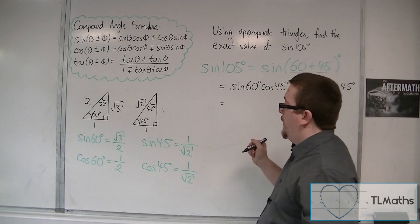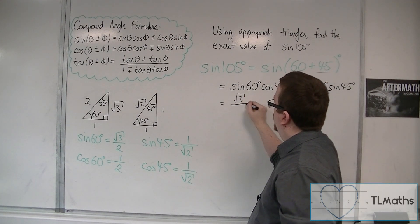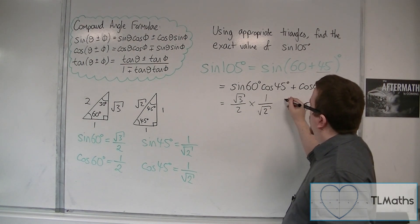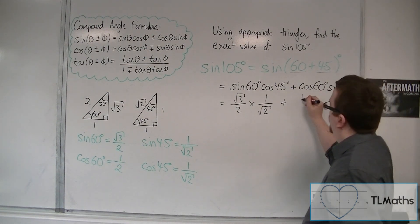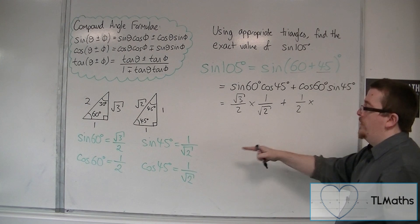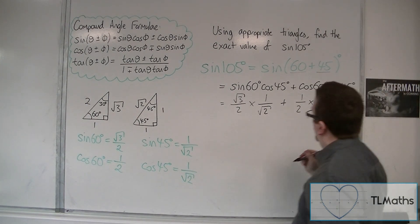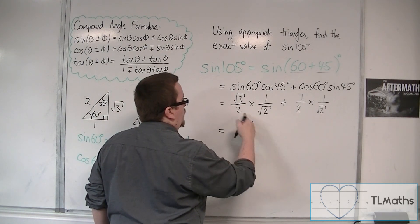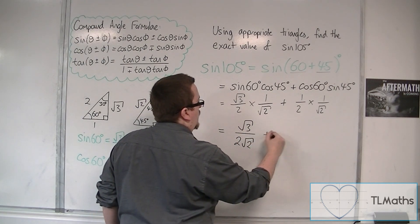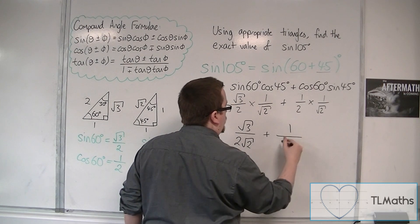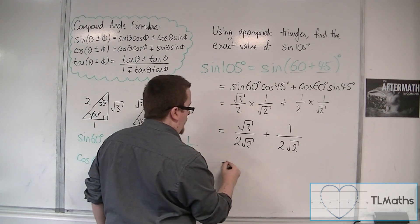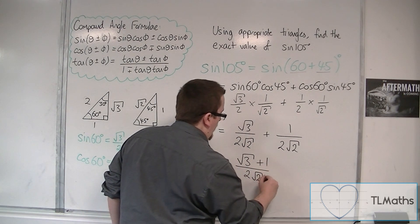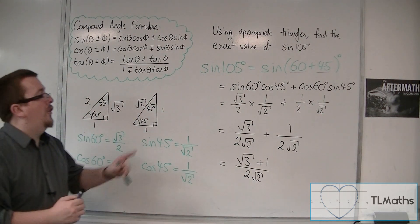So: sine of 60 is opposite over hypotenuse, so root 3 over 2. Cos of 60 is adjacent over hypotenuse, so 1 half. Cos of 45 is adjacent over hypotenuse, so 1 over root 2, and sine of 45 is also 1 over root 2. Multiplying through, we've got root 3 over 2 times root 2, plus 1 times 1 over 2 times root 2. So root 3 plus 1 over 2 root 2 is the exact value of sine of 105.